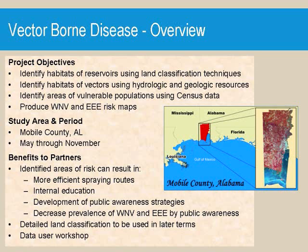The area studied was the County of Mobile, Alabama, during the months of May through November. These months were chosen because they are the peak months in mosquito reproduction.